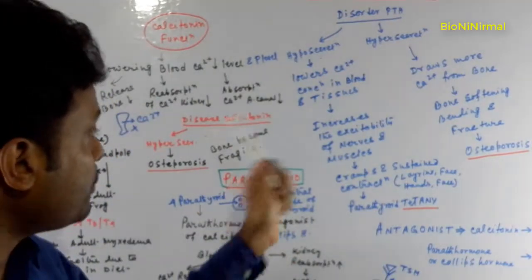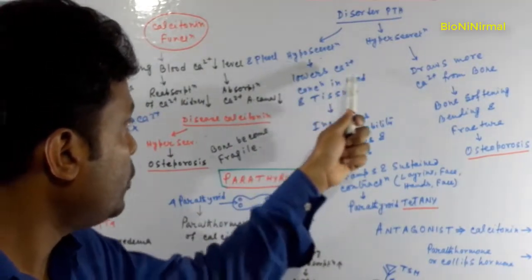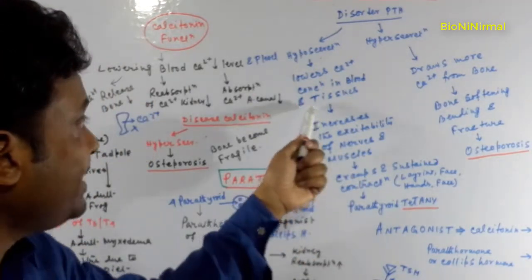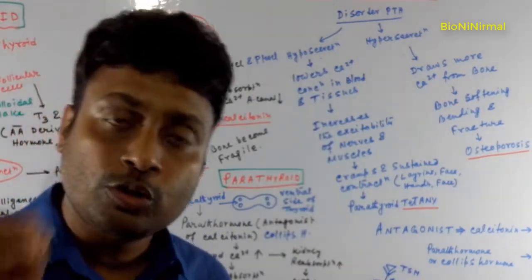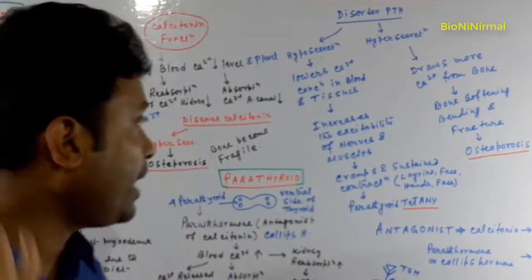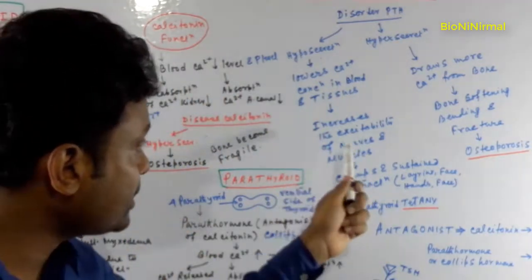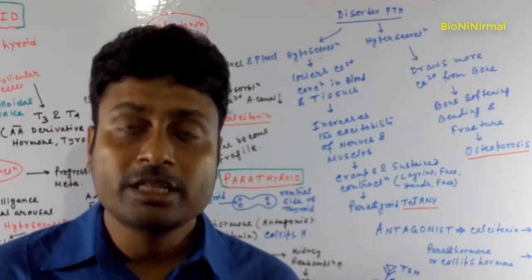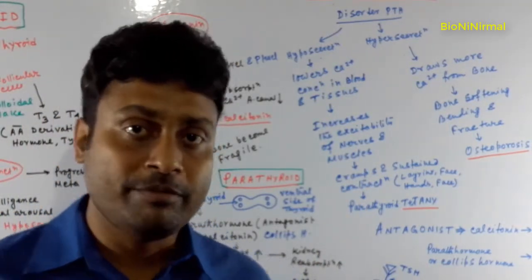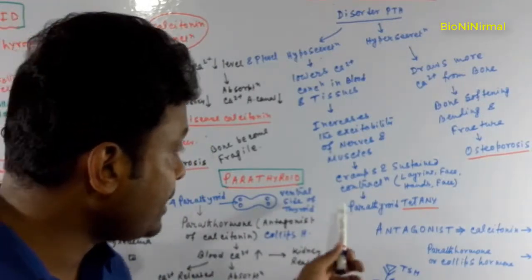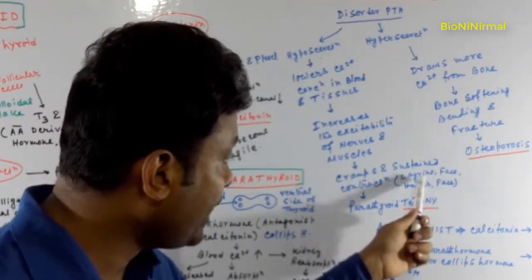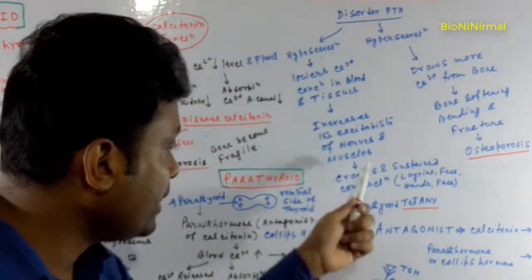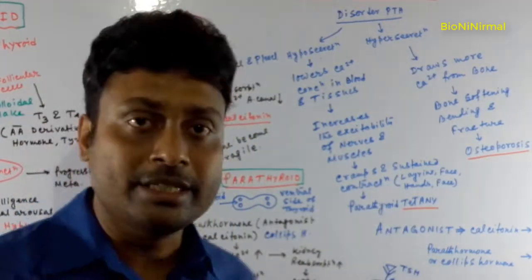Due to hyposecretion of parathormone, the calcium concentration in the blood and tissues is lowered, because parathormone normally increases blood calcium level. This lowered calcium level increases the excitability of nerves and muscles, and the excitation is sustained in the larynx, face, and hands — and so this condition is called parathyroid tetany.